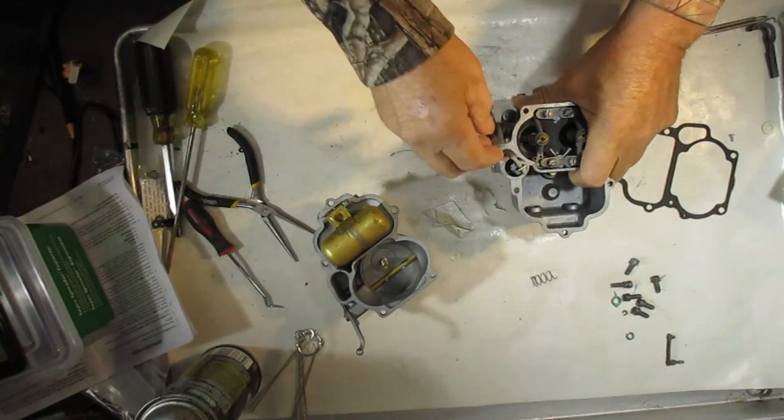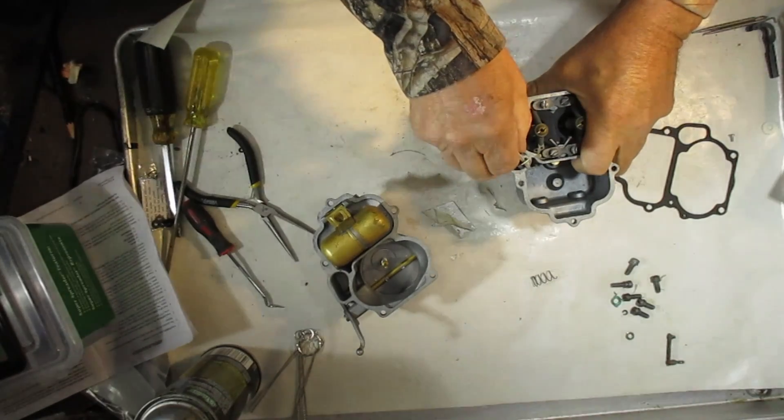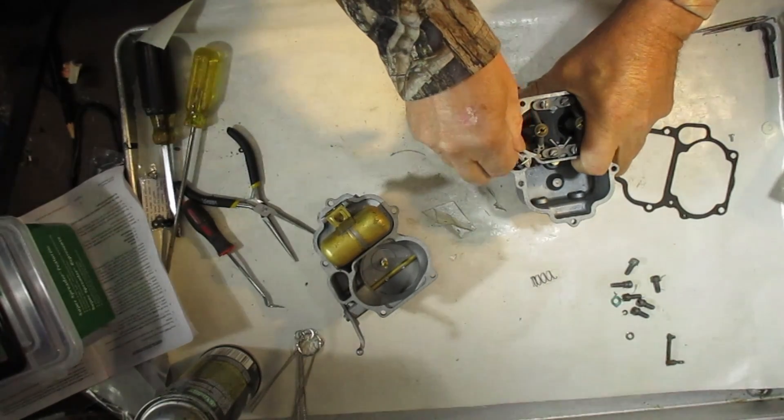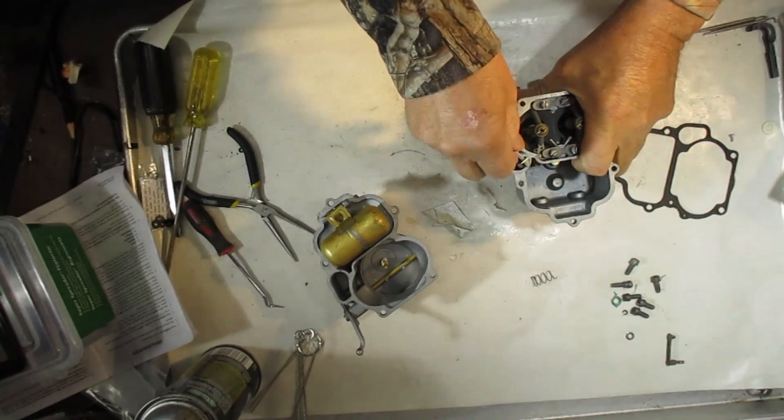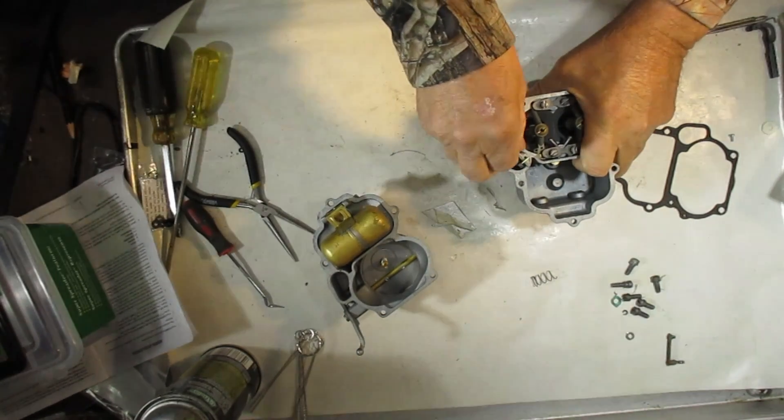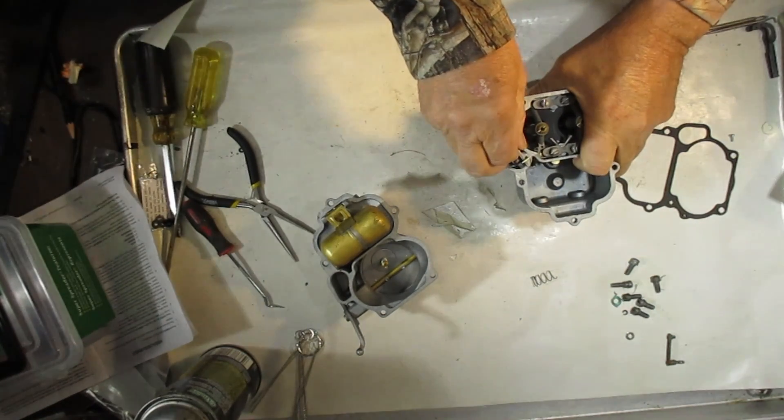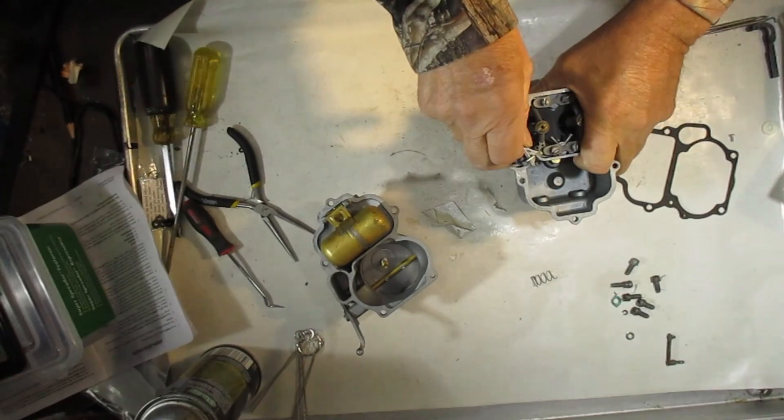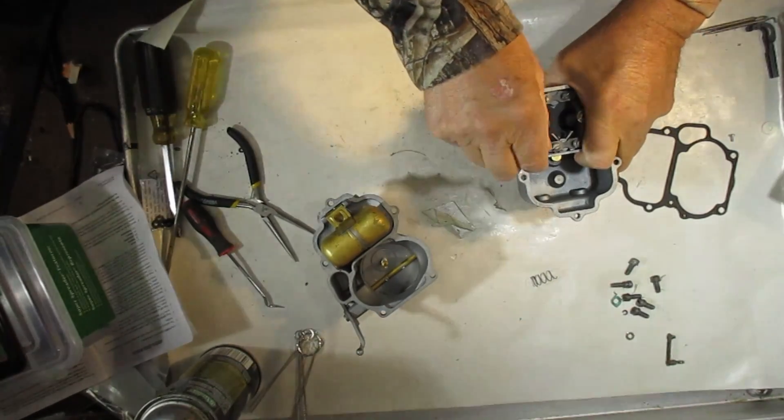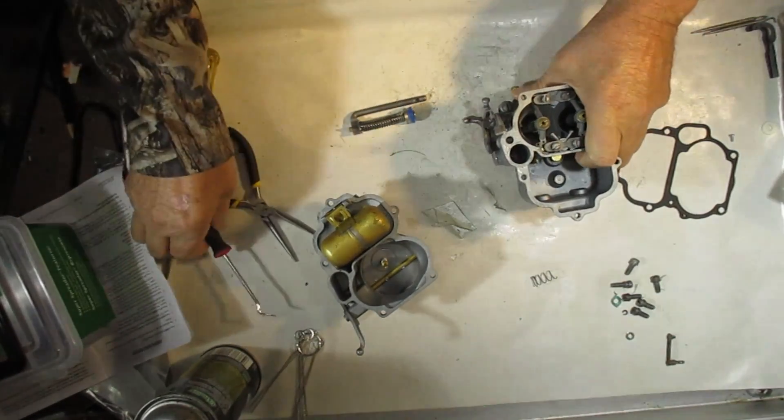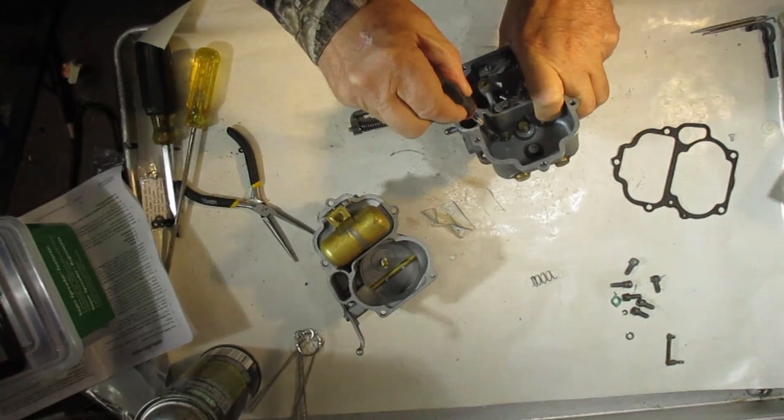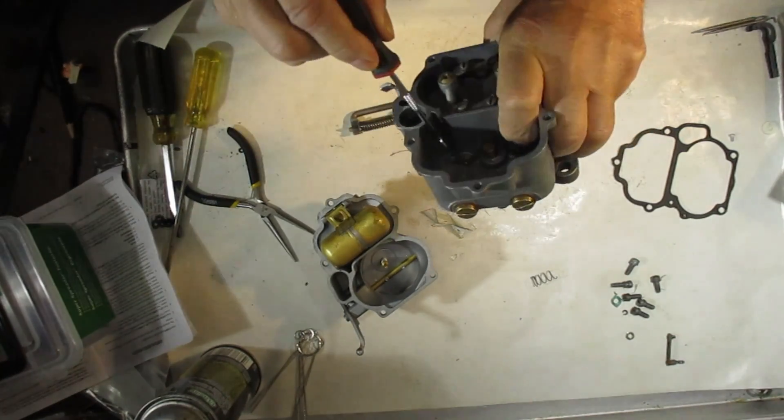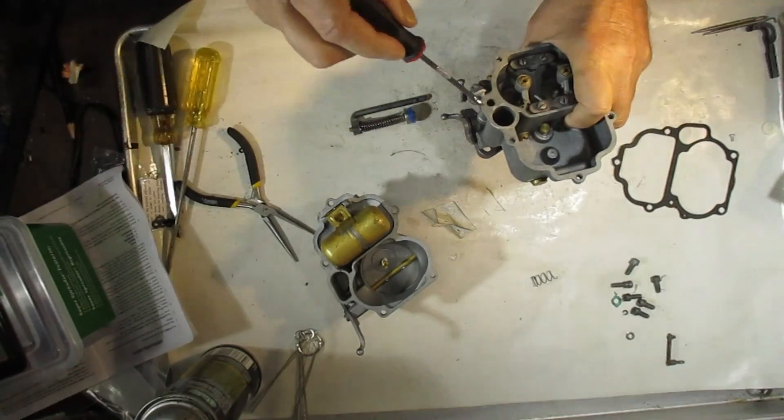So when you let up on the throttle, the pump will come up and actually the pump will help suck the fuel from the float bowl from this little hole right here. You can hopefully see that.